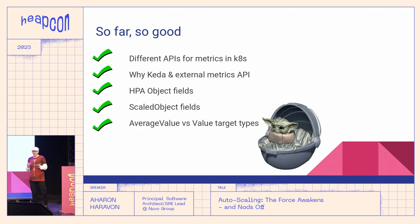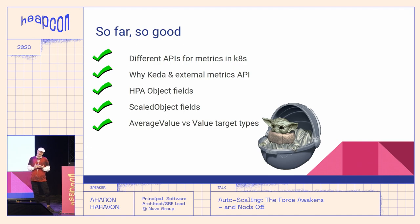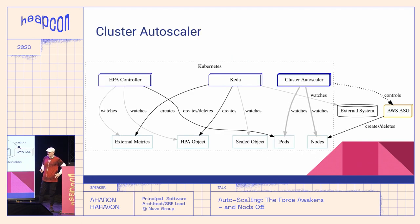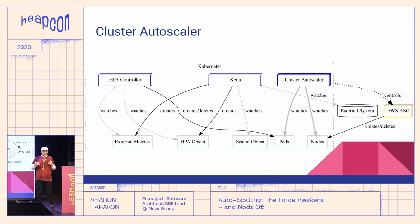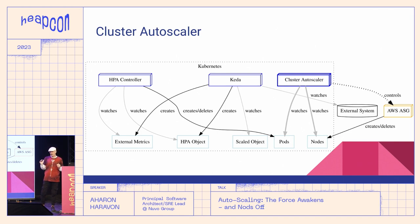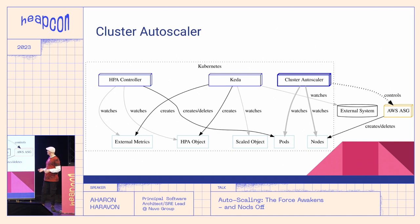We've covered the different metrics APIs, why KEDA and external metrics API is the way to go, the HPA object fields, the ScaledObject fields, and the difference between average value and value target types. Now let's look at the cluster autoscaler. It detects that pods are lacking resources like CPU and memory to be scheduled, then talks with cloud vendor infrastructure to request more nodes. Likewise, it can detect that a node is utilized below a configured threshold and remove it. This is the function of the cluster autoscaler.